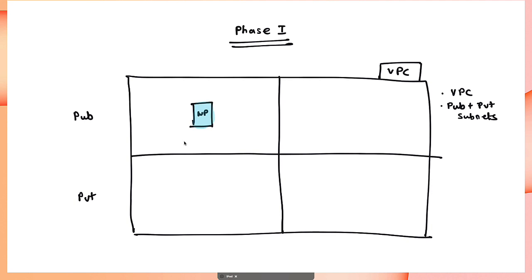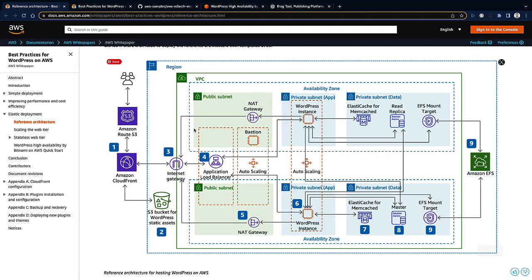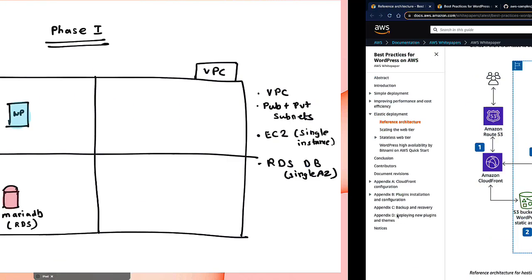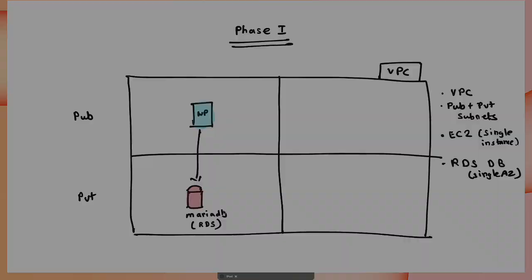Once you have the VPC, deploy a WordPress instance — you can use a pre-configured WordPress template like Bitnami, or start with a Linux server and install WordPress yourself. This is a simple, stateful implementation: an EC2 instance in a public subnet. For the database, you can install MariaDB, MySQL, or use Amazon Aurora. Create a single free-tier instance with a subnet group using the two private subnets. Phase one: WordPress in the public subnet, database in the private subnet.